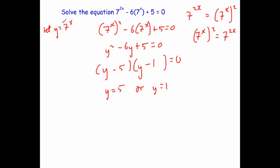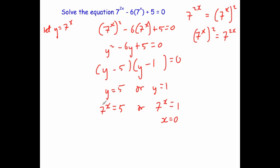But the question has x's, so let's go back to where we said y equals 7 to the power of x. Replacing y, we write 7 to the power of x equals 5 or 7 to the power of x equals 1. This second one is easy — anything to the power of 0 is 1, so x equals 0.